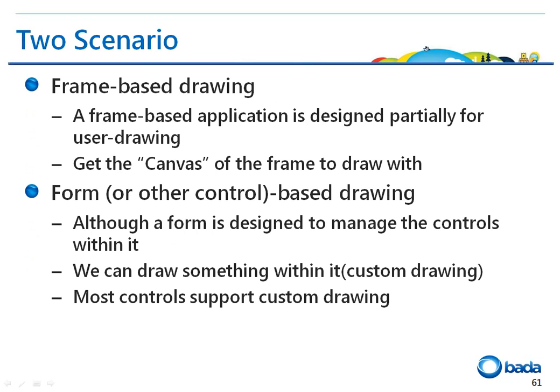There are two ways to draw an object in Bada. The first way is by drawing an object using a frame based application. A frame based application has been designed so that it is possible to directly draw an object on the frame without using a specific control. The application directly acquires the canvas object from the frame and draws on the frame using the canvas.